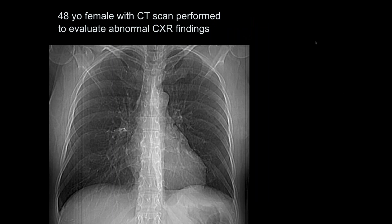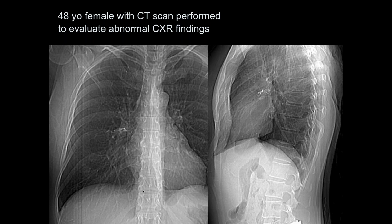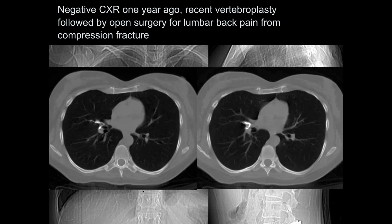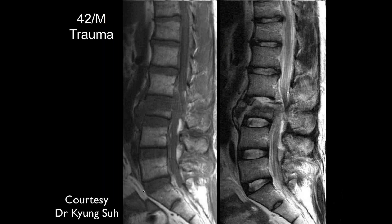On chest X-ray there is density in the upper lungs. This is from vertebroplasty — the cement has gotten into a vein and embolized. That's another complication you can have from vertebroplasty: you can actually embolize into the vascular system.